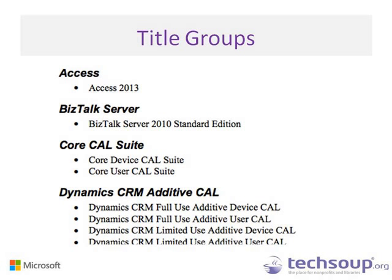Someone asked about the difference between MAK and KMS keys. It depends on the size of your end user base accessing the server. If you have more than 50 users accessing the server, it is recommended to use the KMS key. If you have fewer than 50 users accessing the server, you should use the MAK key. When you log into the Volume Licensing Service Center, both will show up because some organizations need access to one or the other — it's easier for Microsoft to list them both.